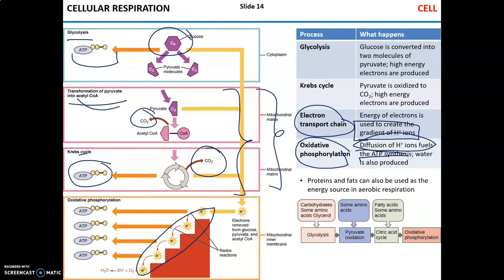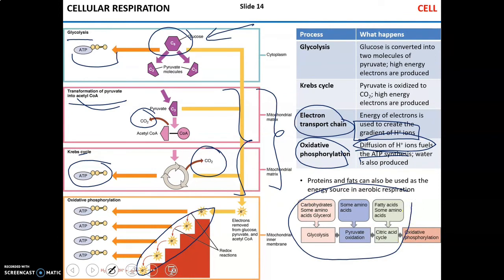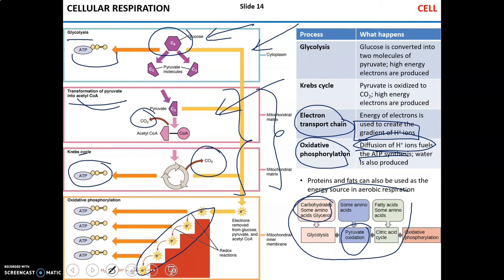In cellular respiration, carbohydrates, fats, and proteins can all serve as primary fuel sources. Carbohydrates, glycerol, and some amino acids can enter at glycolysis, while other amino acids can enter at the Krebs cycle. Fatty acids and additional amino acids can also enter the Krebs cycle at various points.